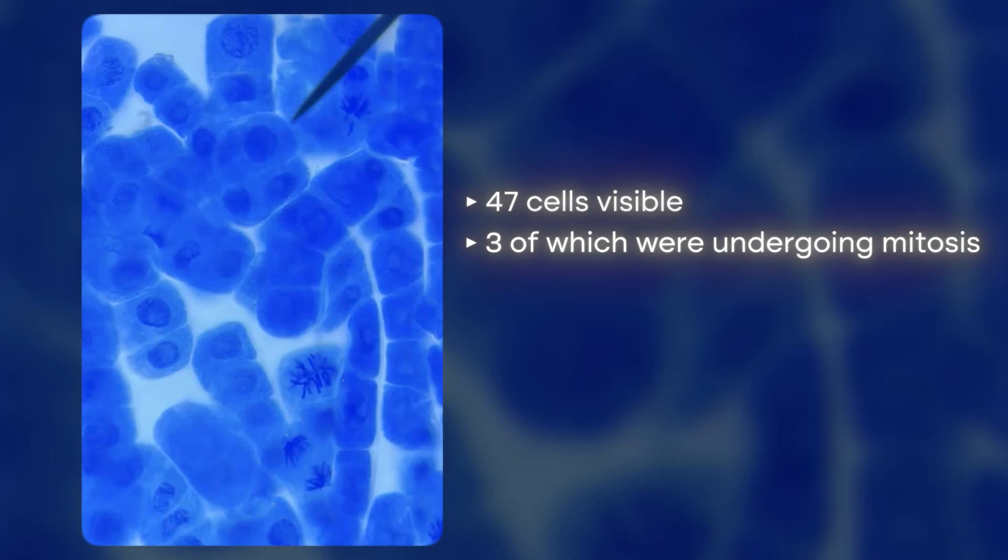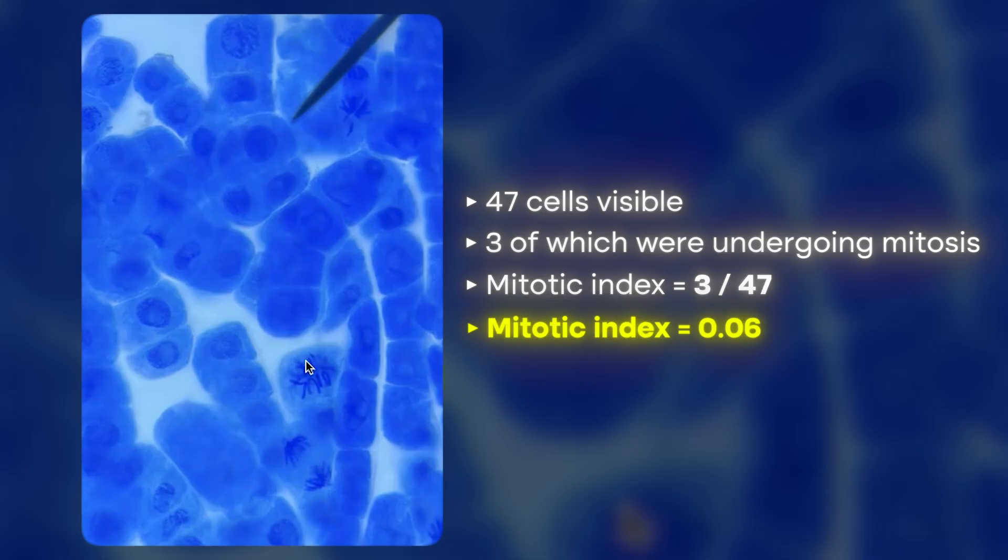So to calculate the mitotic index then, we would need to do three divided by 47. Three because we've got three cells in mitosis, 47 because that's how many cells I could see. And that comes to 0.06. That would be the mitotic index.